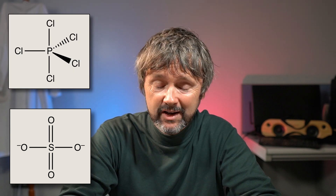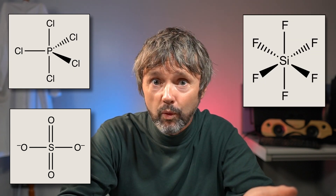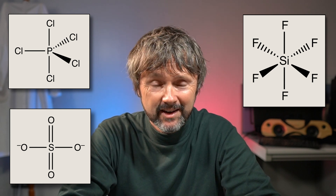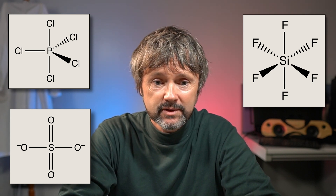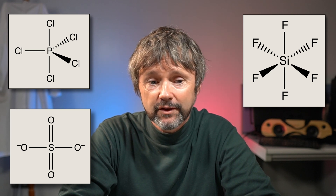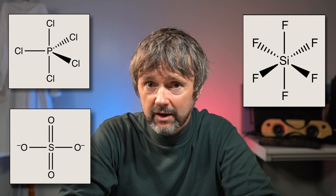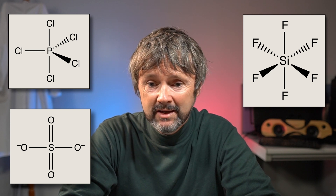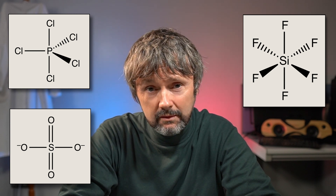Problems arise when we try to apply the octet rule to molecules like the sulfate anion, phosphorus pentachloride, silicon hexafluoride, and so on. You can see here that these central atoms have more than the eight valence electrons allowed by the octet rule. The phosphorus atom has 10, and the sulfur and silicon atoms both have 12. These are called hypervalent compounds — in other words, at least one of the atoms has more valence electrons than permitted by the octet rule.